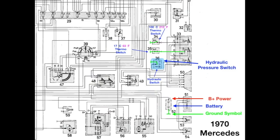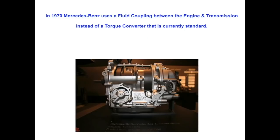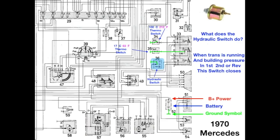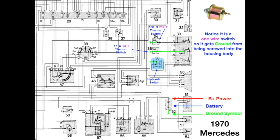We have a hydraulic pressure switch. So, here's a typical hydraulic switch. What does it do? In 1970, Mercedes used a fluid coupling between the engine and transmission instead of a torque converter that is currently their standard. So, when the transmission is running and building pressure in first, second, and reverse gears, this switch closes. Notice that it is a one-wire switch, so it gets its ground from being screwed into the housing body as well.